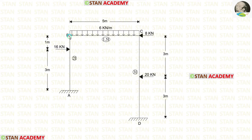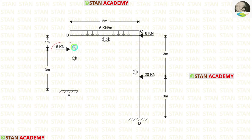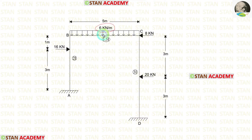In this frame there are two columns: column AB and column CD. Also there is a beam BC. In column AB there is a point load of 16 kilonewton acting at a distance of 1 meter from point B. In beam BC there is a uniformly distributed load of 6 kilonewton per meter acting for the full span. In column CD there is a point load of 20 kilonewton acting at the center.